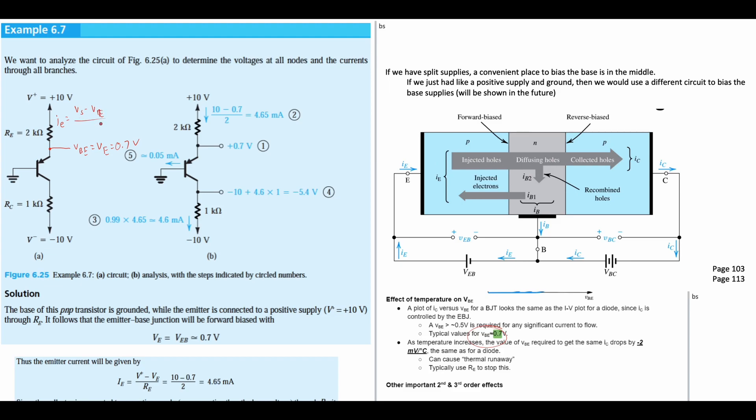This is going to be over the resistance that it goes over, which is the RE. So this is going to be 10 minus 0.7 over our 2 kilo-ohms, and that's going to give us 4.65 milliamps. So that also matches up as well.